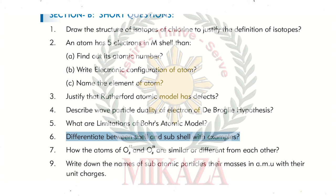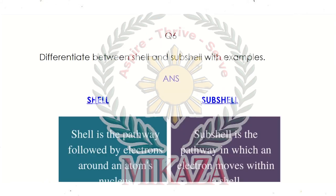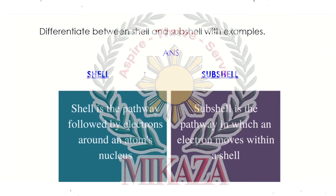Question No. 6: Differentiate between shell and sub-shell with examples. A shell is the pathway followed by electrons around an atom's nucleus. A sub-shell is a pathway in which an electron moves within a shell. In electronic configuration we have S, P, D, and F sub-shells — these are the pathways inside the shell in which electrons move, known as sub-shells.